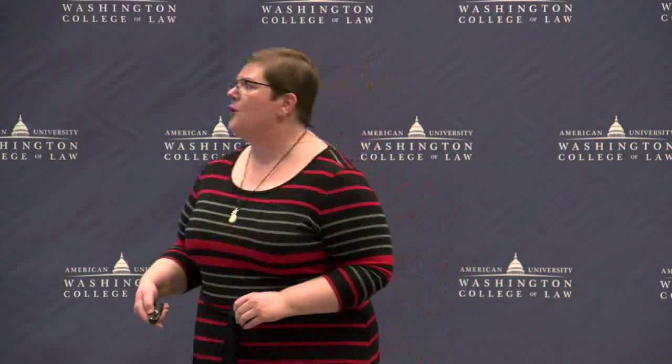This might be the first time you're told it's valuable within the past month or so. To give you an idea, this is a chart I made emphasizing what some examples are of data, knowledge, and information. So law is data — the way it's produced by the courts, produced by agencies, that is data. Organized into a chronological order, that is information. And then annotations and indexes — those are knowledge.